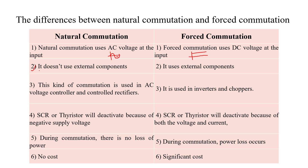Second point: natural commutation does not use external components — the device turns off naturally when reverse bias voltage appears, requiring no external components. In force commutation, external components or external circuitry are required to turn off the device. Third point: natural commutation is used in AC voltage controllers or controlled rectifiers, whereas force commutation is used in inverters or choppers.